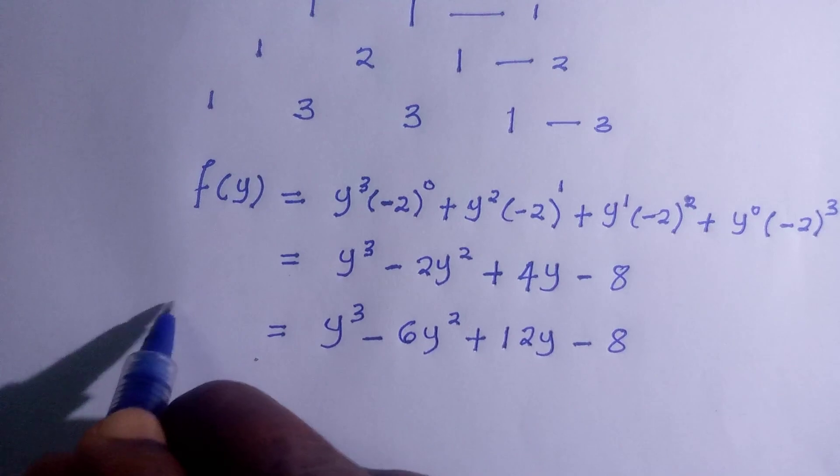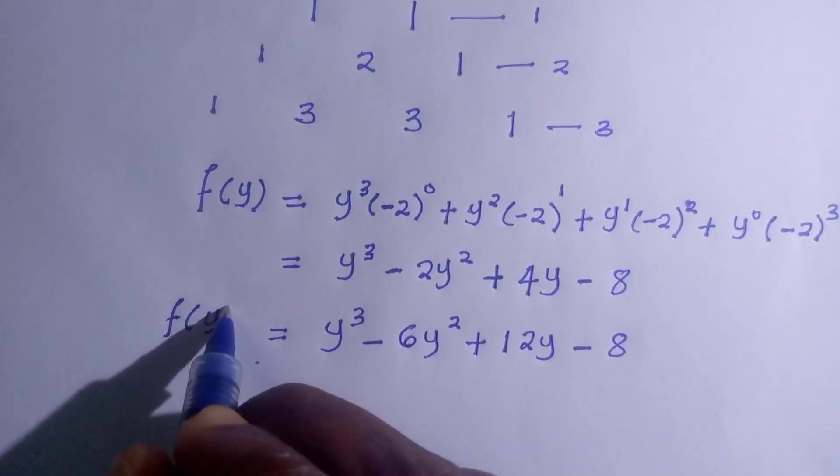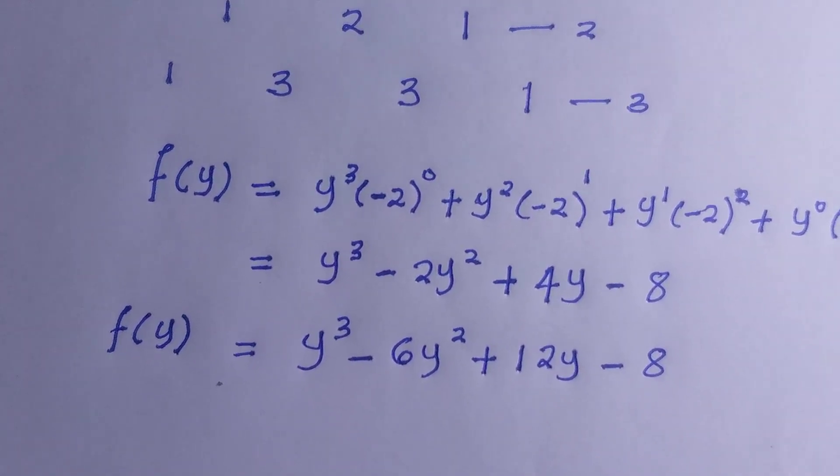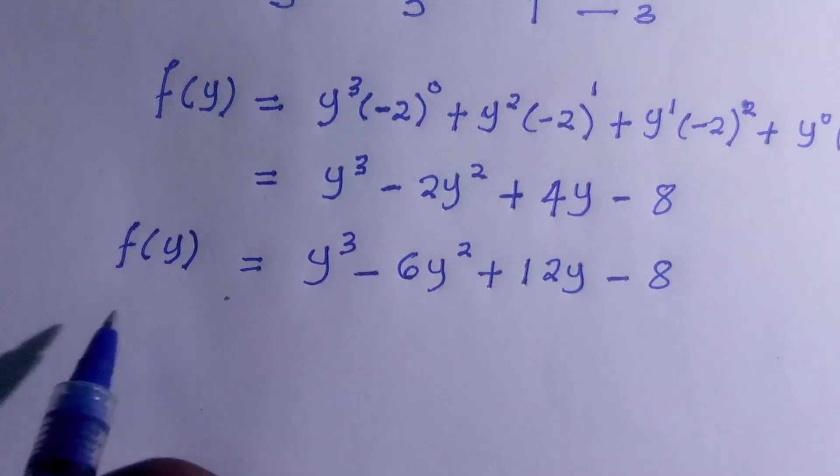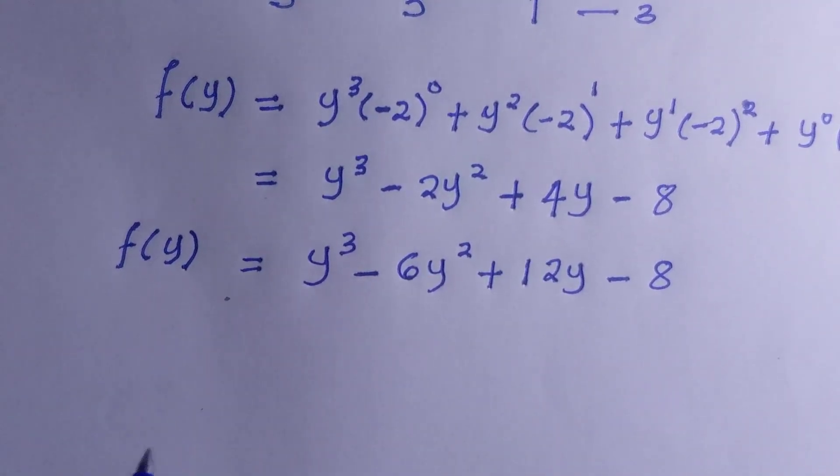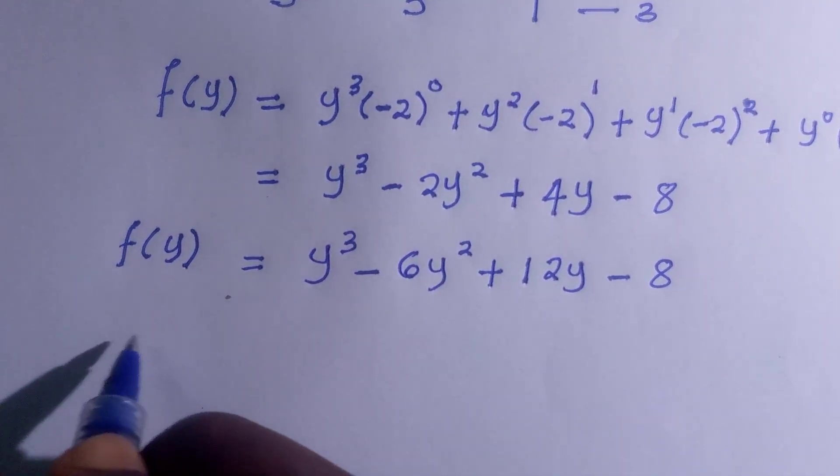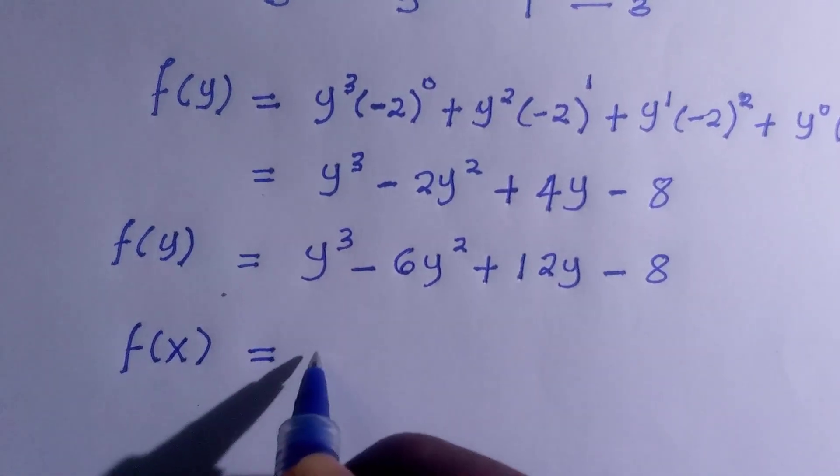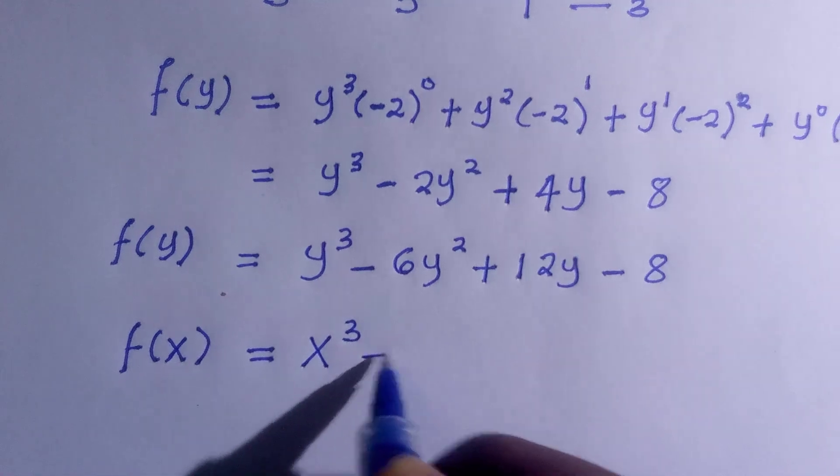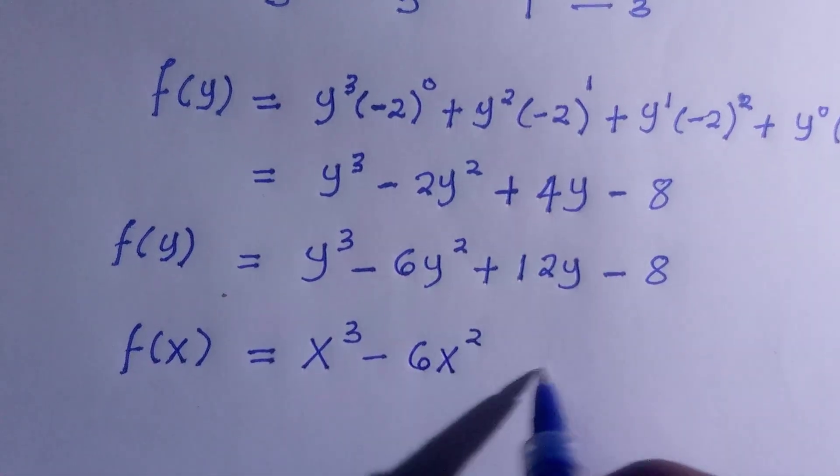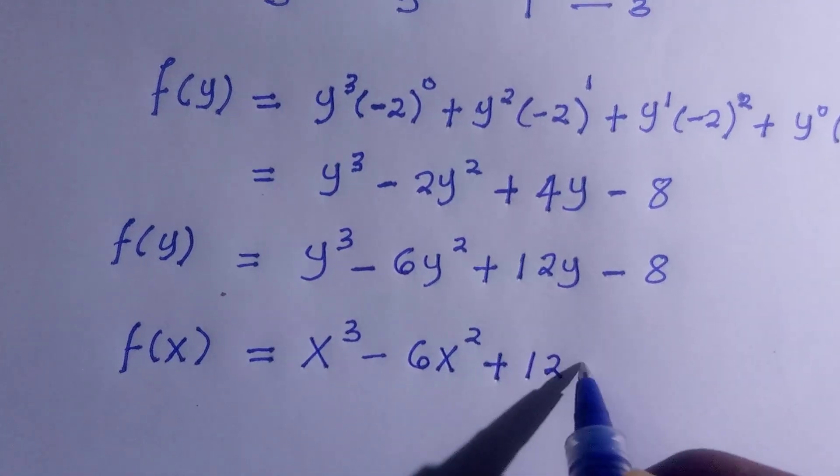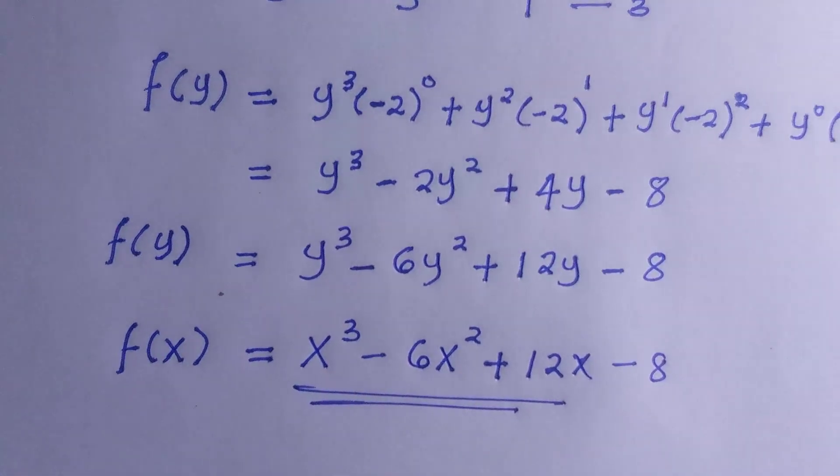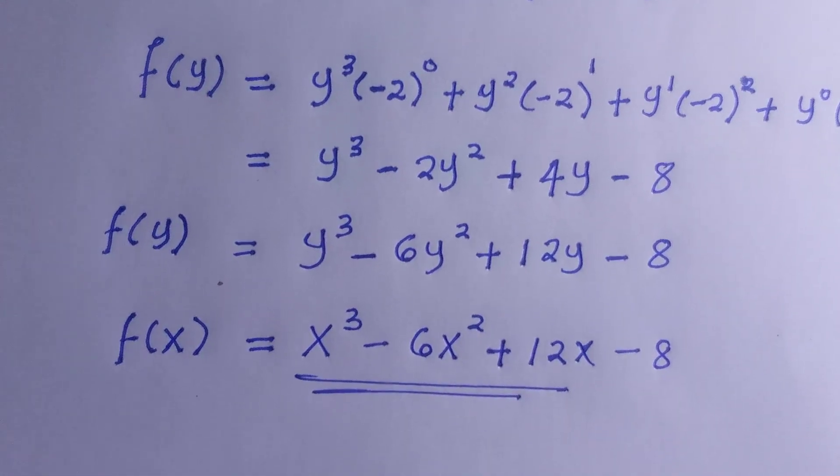And the whole of this is equivalent to f(y). So by having this, we continue by replacing y with x, so we have f(x) equals x to the power of 3 minus 6x to the power of 2 plus 12x minus 8. And this is the value for f(x) in this functional equation.